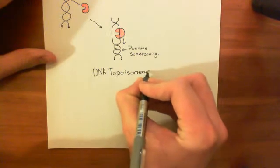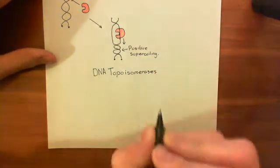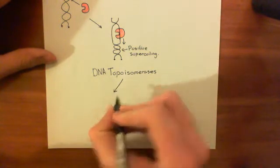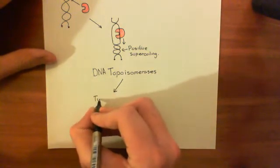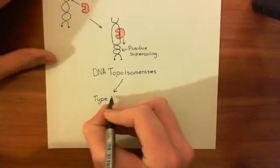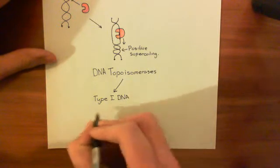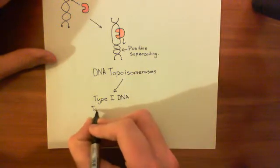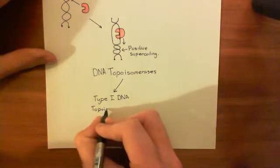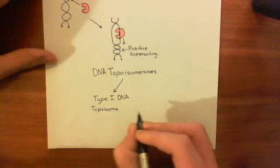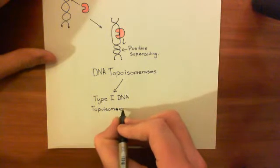And you can divide DNA topoisomerases into two broad groups. One is the type 1 DNA topoisomerases, and the names of these can get quite confusing, as you'll see later when we start talking about DNA gyrase.